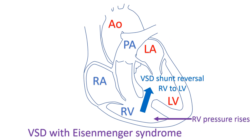Similarly, when the right ventricular pressure rises above that in the left ventricle, the flow across the ventricular septal defect reverses. Blood flows from the right ventricle to the left ventricle. Eisenmenger VSD causes uniform central cyanosis.